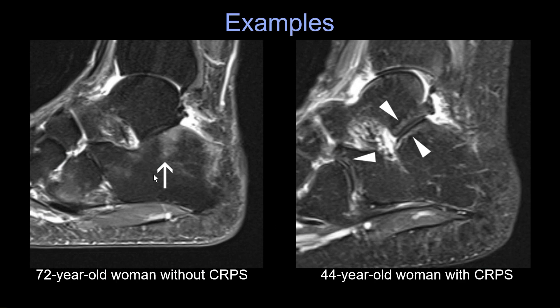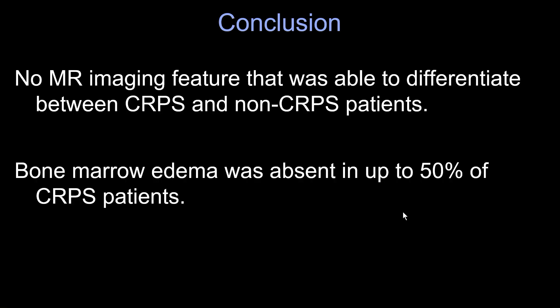Here are some examples: one case without CRPS and one with CRPS. You can see subcortical enhancement, which is typically also seen in inactivity, osteopenia, or osteoporosis after prolonged disuse of the extremity. But this finding alone was not able to differentiate between the two groups. In conclusion, no MR imaging feature was able to differentiate between CRPS and non-CRPS patients, and bone marrow edema was absent in up to 50% of CRPS patients. There was also a significant delay between the initial event and the MR scan, as patients were sometimes treated elsewhere for weeks or months before CRPS was suspected.